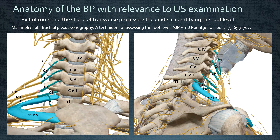Starting from C8, it exits from underneath the C7 vertebra, so it does not ride on the transverse process. Whereas from C7 and upwards, the roots exit sliding out on the transverse processes of their respective vertebra. The shape of these processes is unique, especially for C7, which has a rudimentary anterior tubercle and a prominent posterior tubercle, whereas C6 and upwards have a more regular V shape.